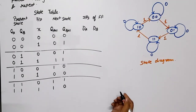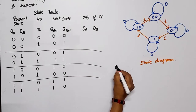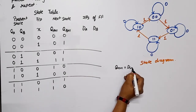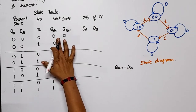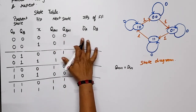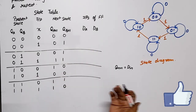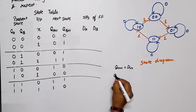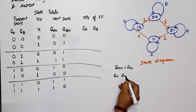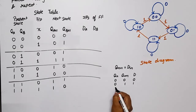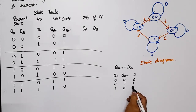Now for DA and DB. In the case of a D flip-flop, QN+1 is equal to D. So QA+1 equals DA, and QB+1 equals DB. From the excitation table of the D flip-flop: if current state is 0 and next state is 0, D is 0; if 0 to 1, D is 1; if 1 to 0, D is 0; if 1 to 1, D is 1. So D simply equals the next state value.